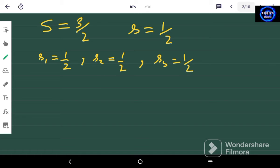So that 1/2 plus 1/2 plus 1/2, it will make up 3/2. That is capital S because the value of capital S is actually equal to the summation of these s values.